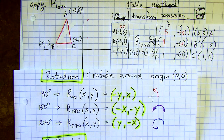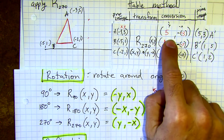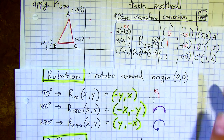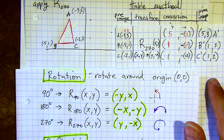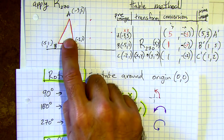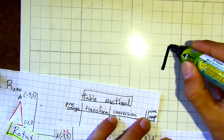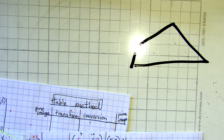How do we feel about rotations? Scale from one to five — pretty good, need a little more practice. I think the conversion part might be the hardest — just organizing it. Right now it's a triangle, but what if it's a trapezoid? That's going to be really hard to rotate in your head. That's where we want to use the table method, especially when it's going to get complicated.